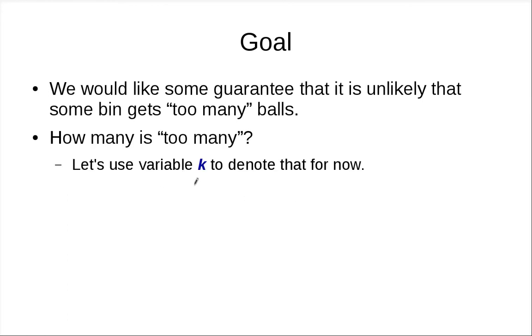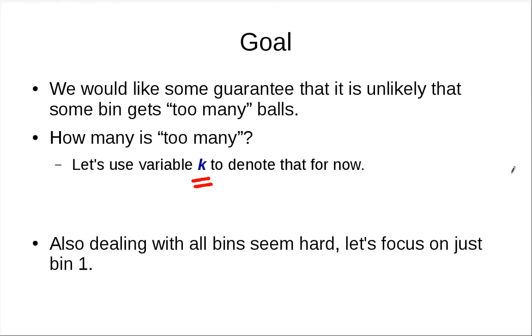So for us, we don't really know, so we just leave it as a variable k. And we use k to compute for the probabilities, and then we figure out, try to figure out the value of k.